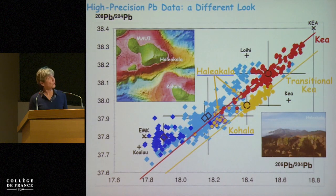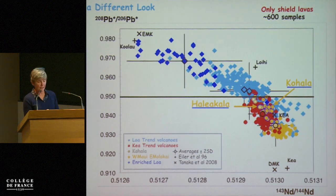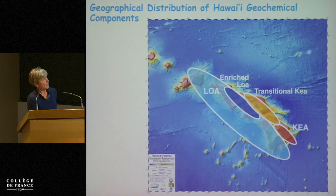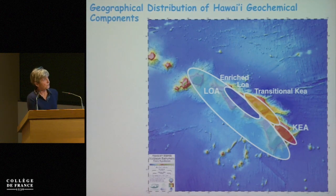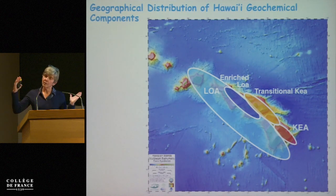This is another isotopic system, just to show that it works across all isotopic systems. Lead is more discriminating, but the other isotopic systems show the same. If we transfer this information to the map, Loa composition occupies the vast majority of the islands over five million years, and Rich Loa is limited to a tiny time period. Transitional Kea is what I call Maui, Kohala, and Haleakala — and then Kea. So it's more complicated than just a sharp difference between the two.